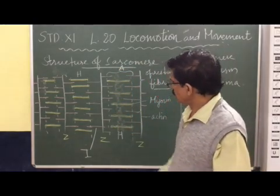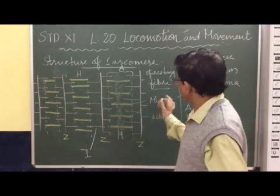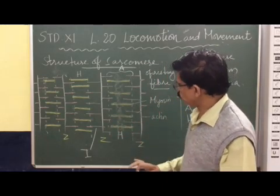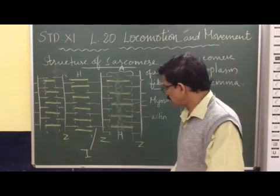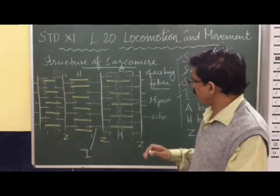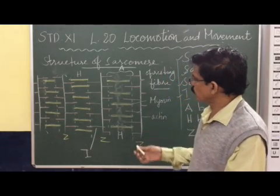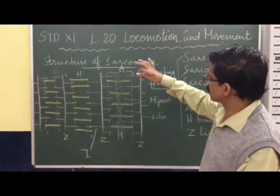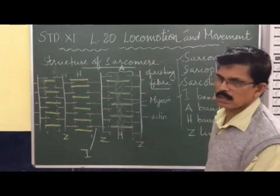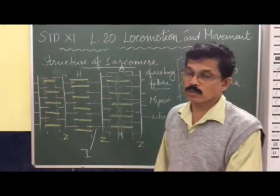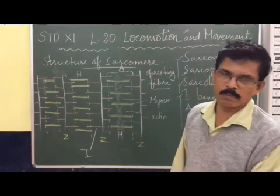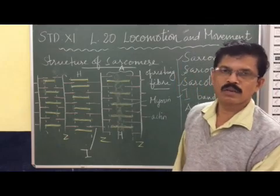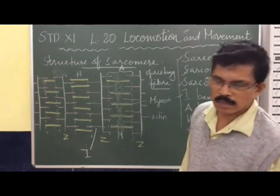So that is all about this introduction. We must know what is the I-band, what is the A-band, what is the H-zone, and what is an isotropic band. This is the structure of the resting fiber. Thank you.